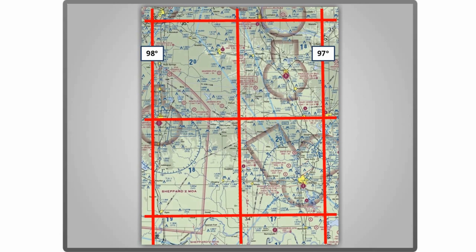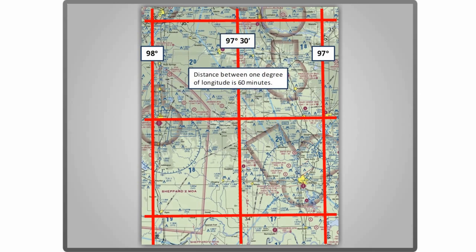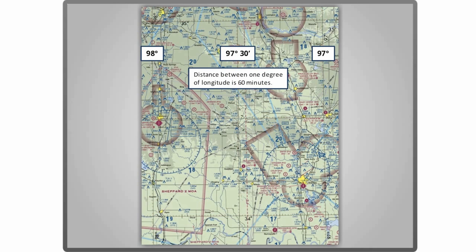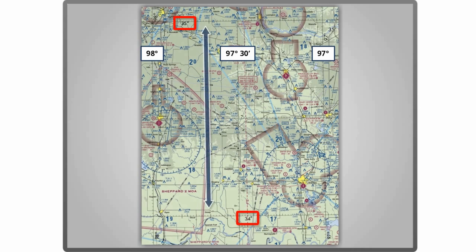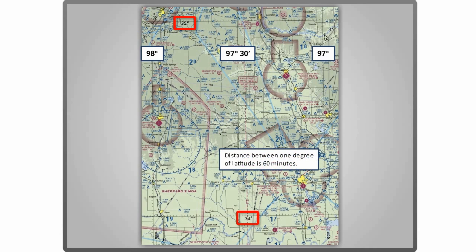Here's the most important thing to remember: one degree of longitude, or latitude, is divided into smaller increments called minutes. There are 60 minutes in one degree. So the longitudinal line in the middle is located at 97 degrees and 30 minutes. On a sectional chart, each line is separated by 30 minutes. Looking at the horizontal lines of latitude, the bottom one lies at 34 degrees north and the one at the top lies at 35 degrees north. The distance between the two lines is 1 degree, equal to 60 minutes, so the line in the middle is at 34 degrees and 30 minutes.